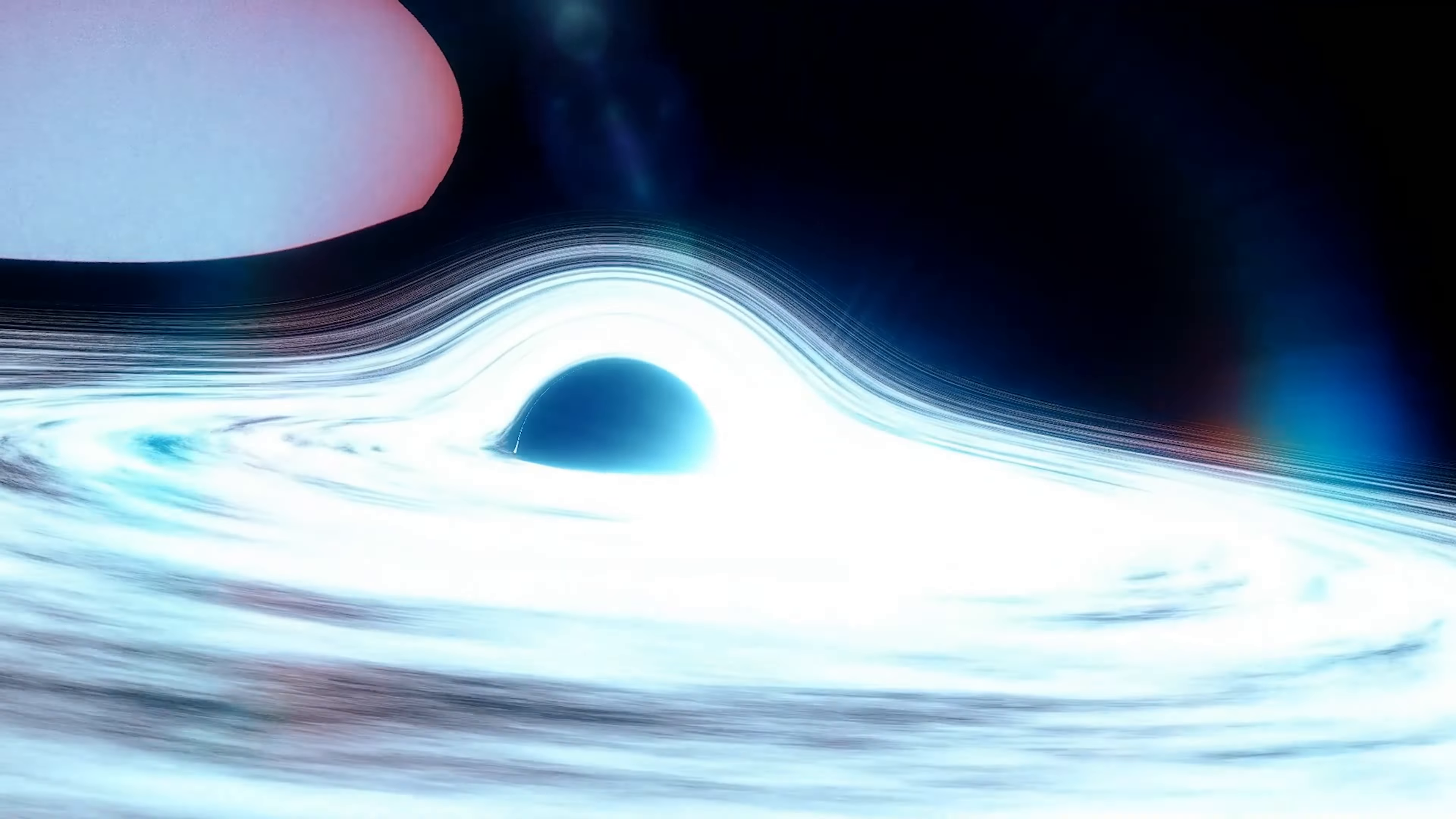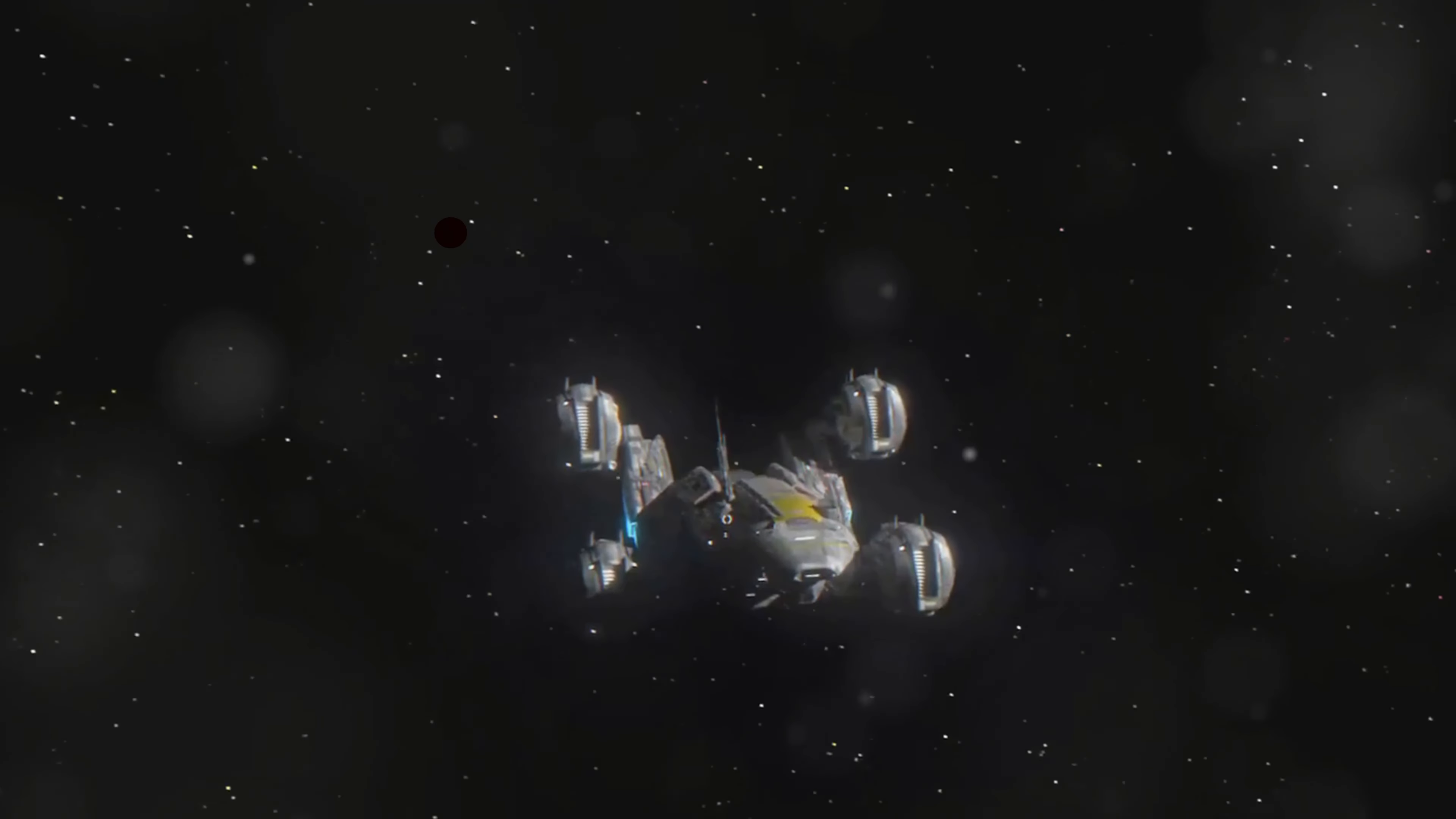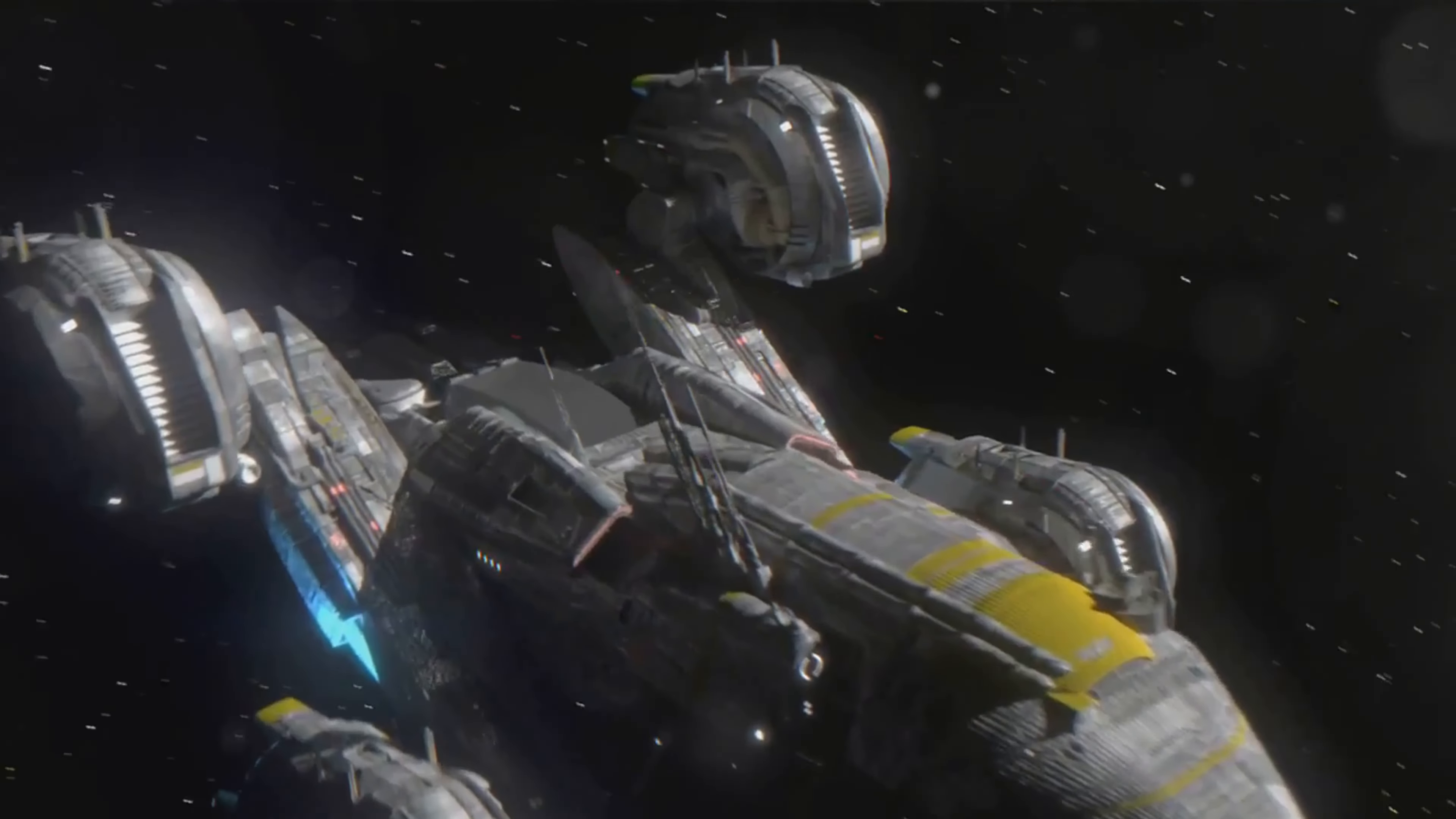Theoretical physicists have proposed a way to extract energy from a rotating black hole, a process known as the Penrose Process. This energy, in the form of radiation, can be directed to create thrust, propelling a spaceship forward.